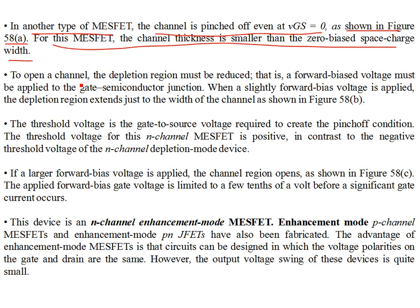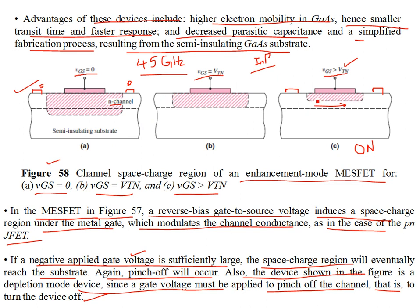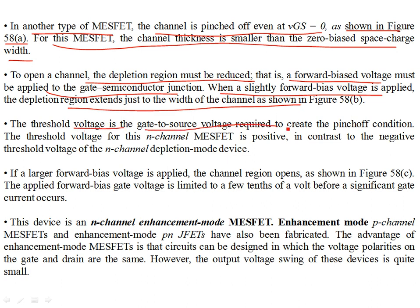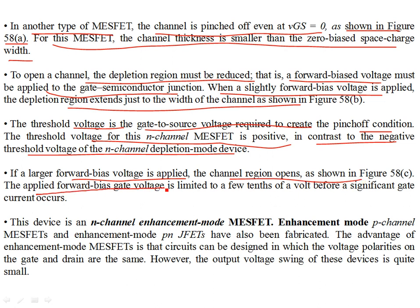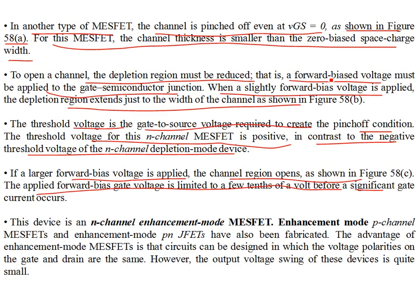For the enhancement-mode MESFET in figure 58a, the channel thickness is smaller than the zero-bias space charge width, so the channel is pinched off even at VGS = 0. To open the channel, the depletion region must be reduced by applying VGS greater than threshold — a forward bias voltage must be applied to the gate-semiconductor junction. When a slightly forward-biased voltage is applied, the depletion region extends just to the channel width at the threshold voltage. A larger forward bias opens up the channel region as shown in figure 58c.